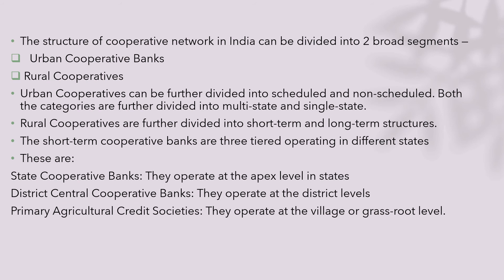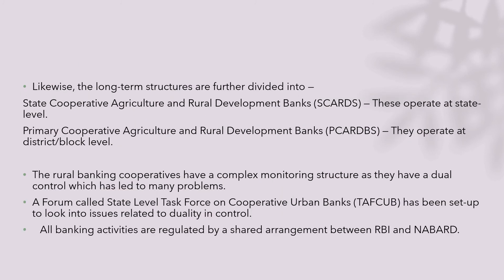Let's understand a little bit more about the short-term cooperative banks which come under the rural cooperative credit society. It starts with the state cooperative banks at the first level, then district cooperative banks operating at each of the districts, then primary agriculture credit societies operating at the grassroots level. The state cooperative agriculture and rural development banks operate at the state level. The rural cooperative bank structure is considered to be complex, and as a result it is very difficult to deal with many of the problems which come especially in the working of these cooperative societies.